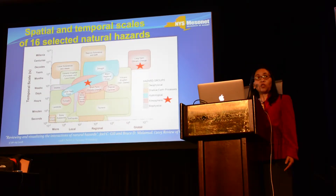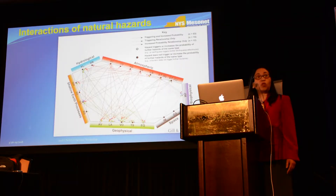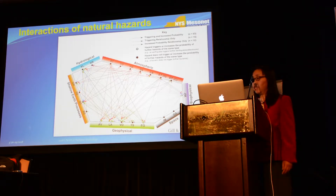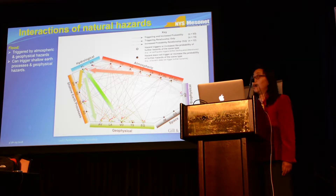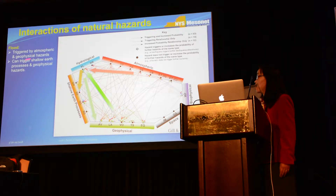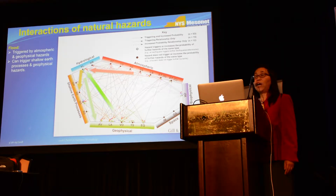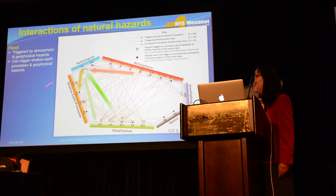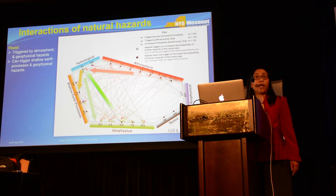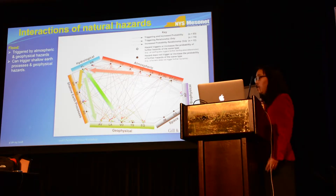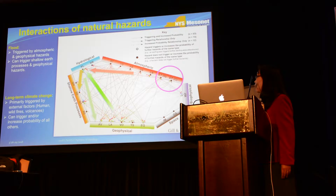And that's not all. I think the most important thing is how all of those natural hazards are connected. One key example: look at the hydrological category, especially flood. Flood is primarily triggered by atmospheric and geophysical processes. And in the meantime, flood can trigger other hazards such as shallow earth processes and geophysical processes. So you see the huge connections between flood and other hazards.